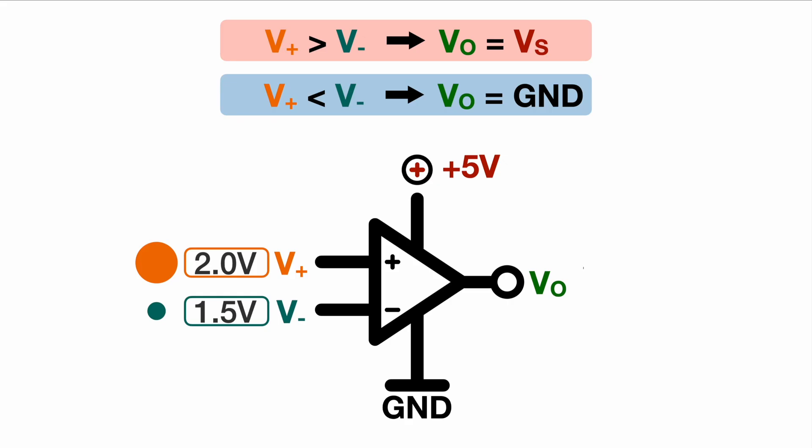And depending on this case we are in the first case in the red case the VO the output voltage will jump now to the supply voltage which is 5 volts. So don't be confused it will not be the biggest input voltage like 2 volts or something it will always be the plus supply voltage the positive supply voltage so in our case the 5 volts.